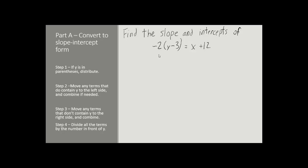So for this problem, I have kind of a messy looking line here. Negative 2 times the quantity, y minus 3, equals x plus 12. Now, it seems a little difficult to find the slope and the intercepts of this, so what we want to do is to convert this equation to slope-intercept form.